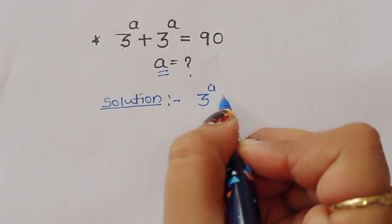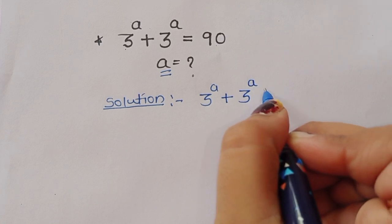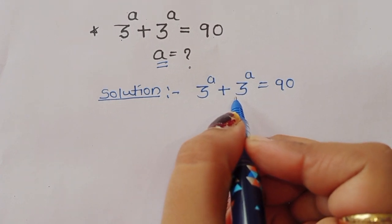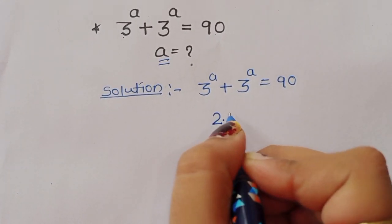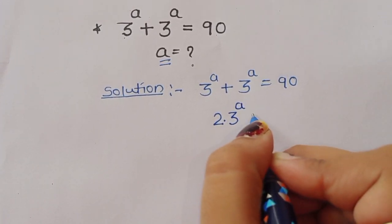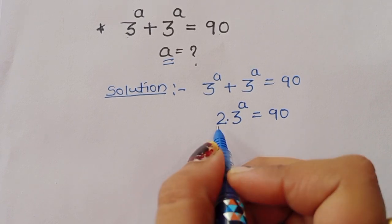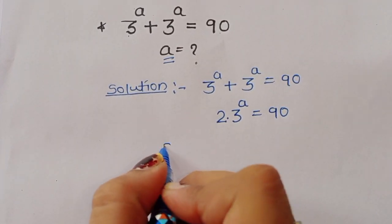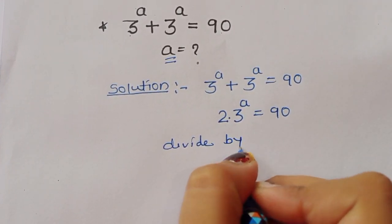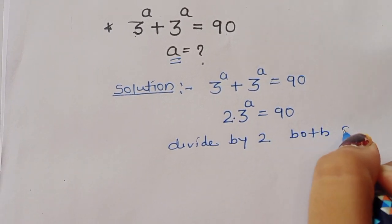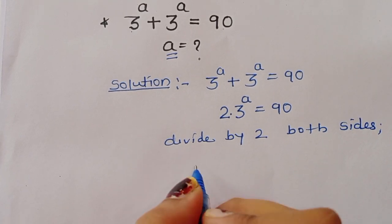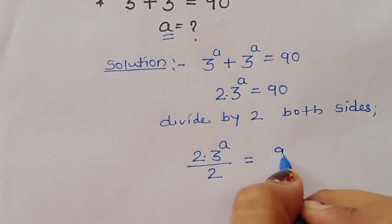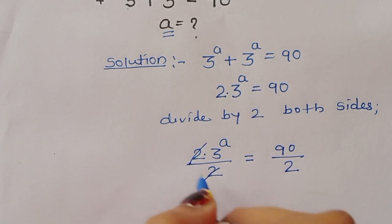3 power a plus 3 power a is equal to 90. Since we have two of the same term, we can write this as 2 times 3 power a is equal to 90. Now we divide both sides by 2.